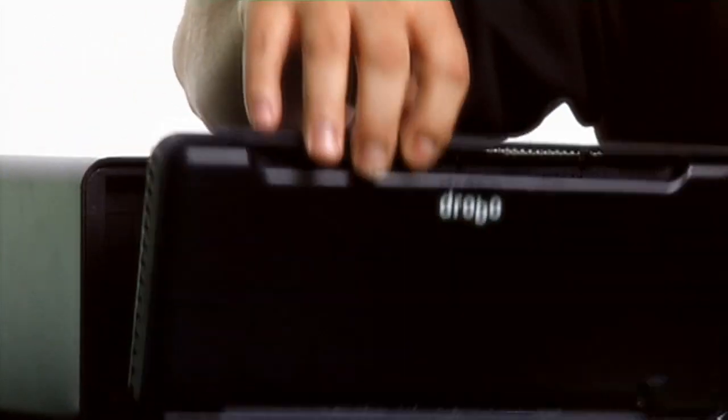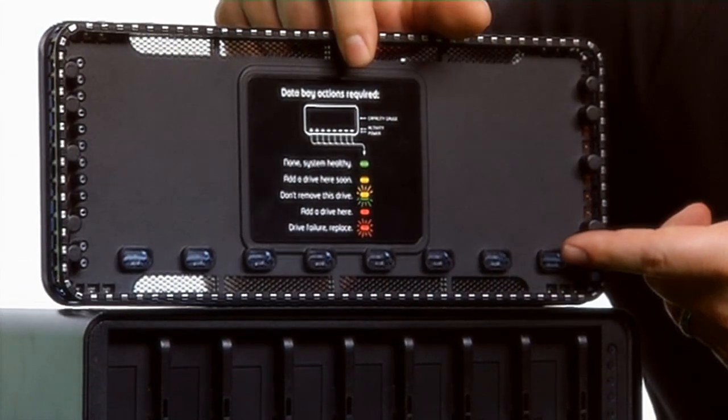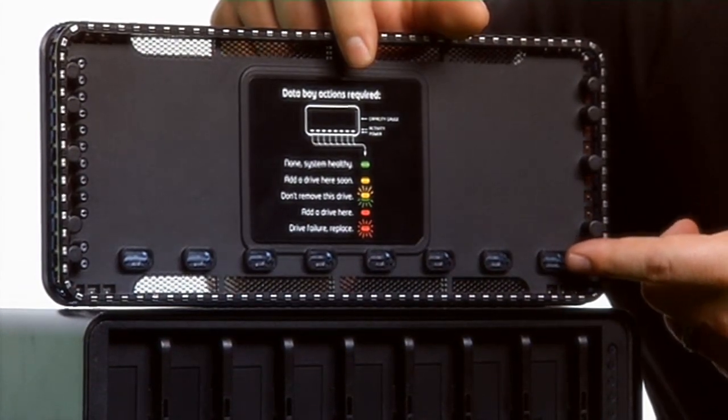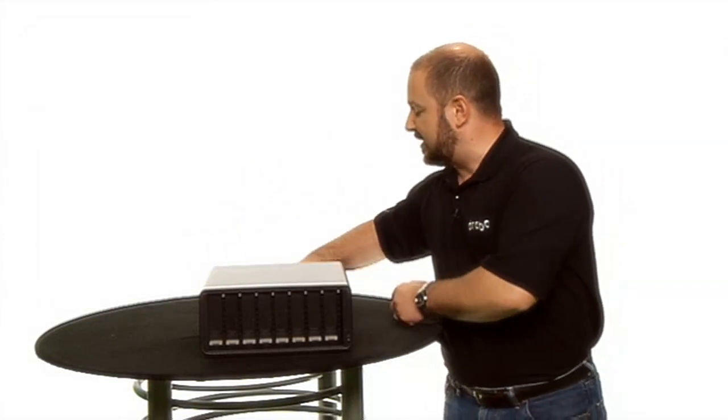Like all Drobos, the B800FS is so simple that the instructions fit here right inside the front cover.